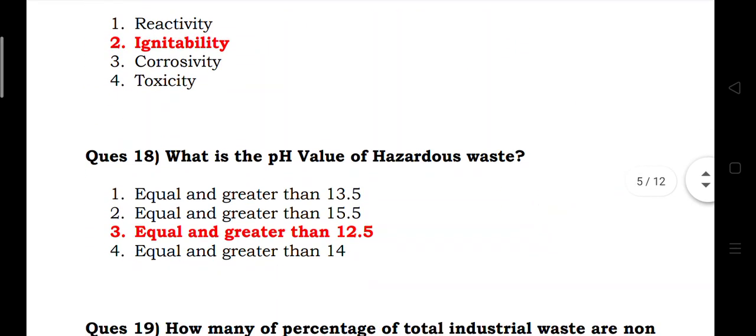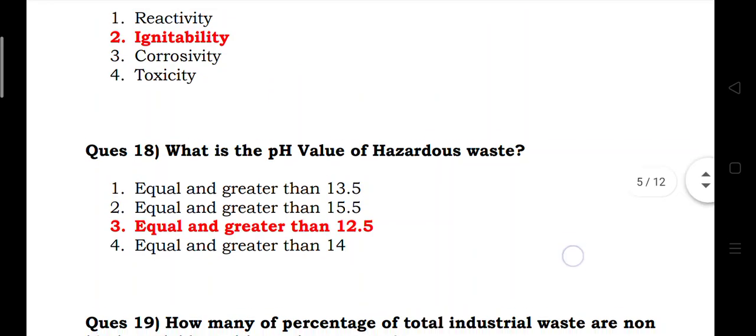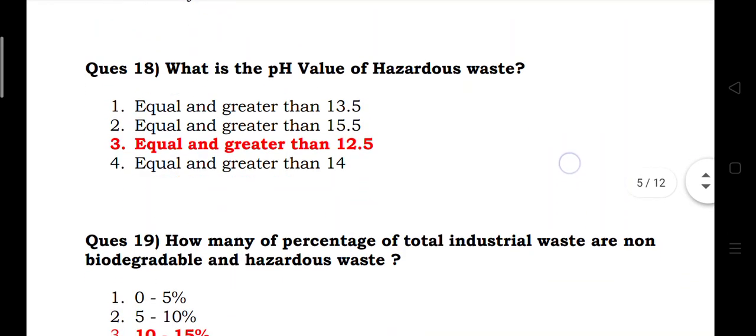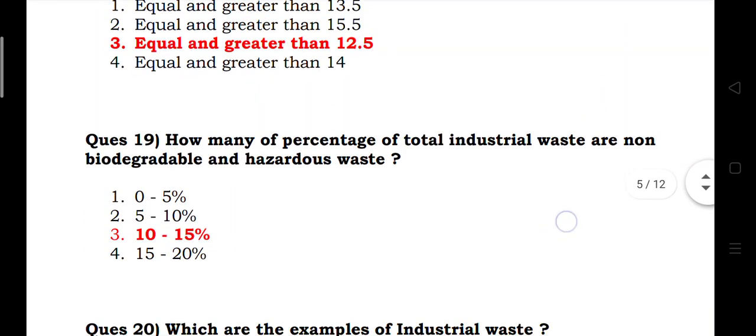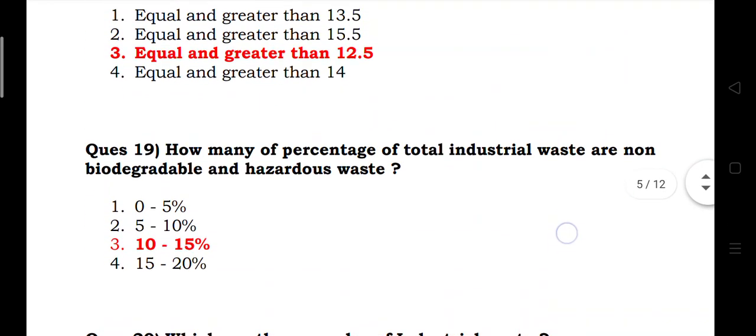What is the pH value of hazardous waste? Answer: equal to or greater than 12.5. What percentage of total industrial waste is non-biodegradable and hazardous? Answer: 10 to 15 percent.